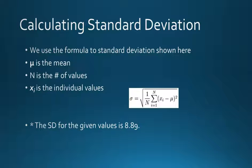One thing that we must do before anything else is calculate the standard deviation. The standard deviation is a statistical value that can tell us a lot about the data set, and it also helps us determine which values are close to the norm and which values are not. The formula for the standard deviation is shown here, where mu is the mean, n is the number of values, and x sub i is the individual values. After plugging in all the numbers, we determined that the standard deviation for the given values is 8.89, so it's almost 9.